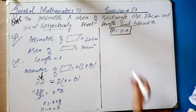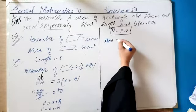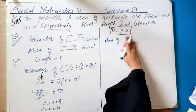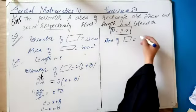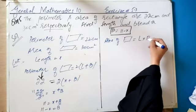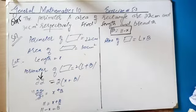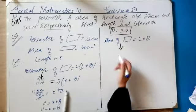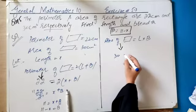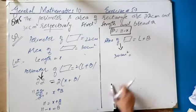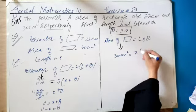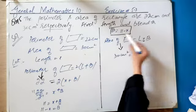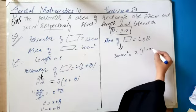Now we take area of rectangle. The formula for area of rectangle, which you have studied in previous classes, is length × breadth. Area of rectangle is given as 30 cm square. So 30 = L × B. Length L we supposed as x, and B we put as (11 − x).